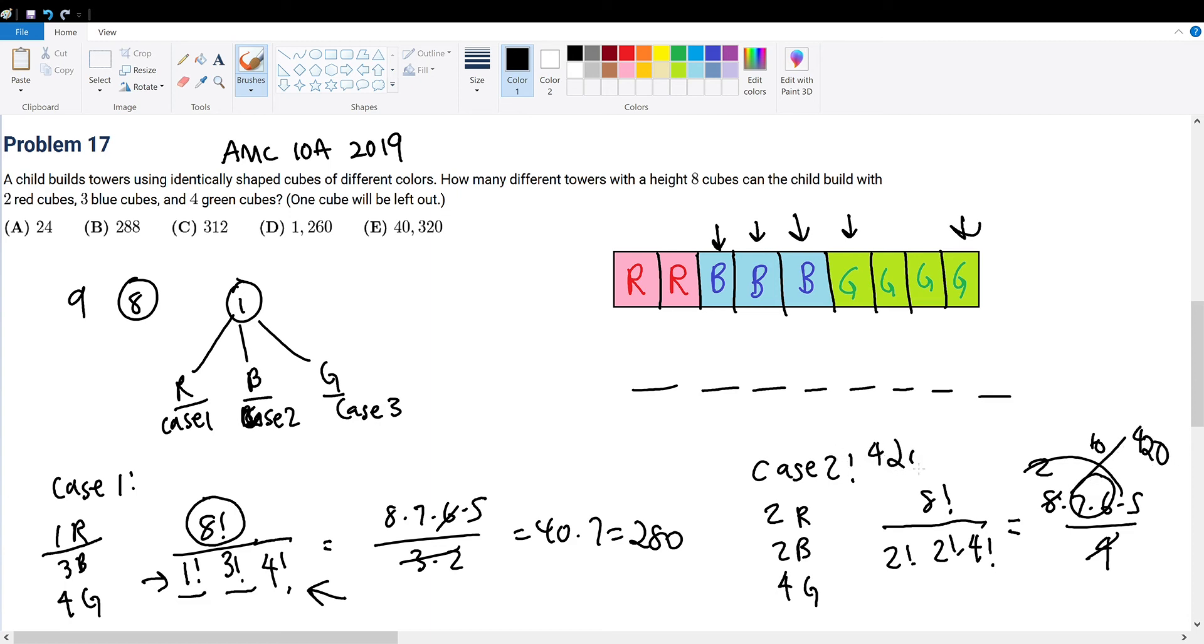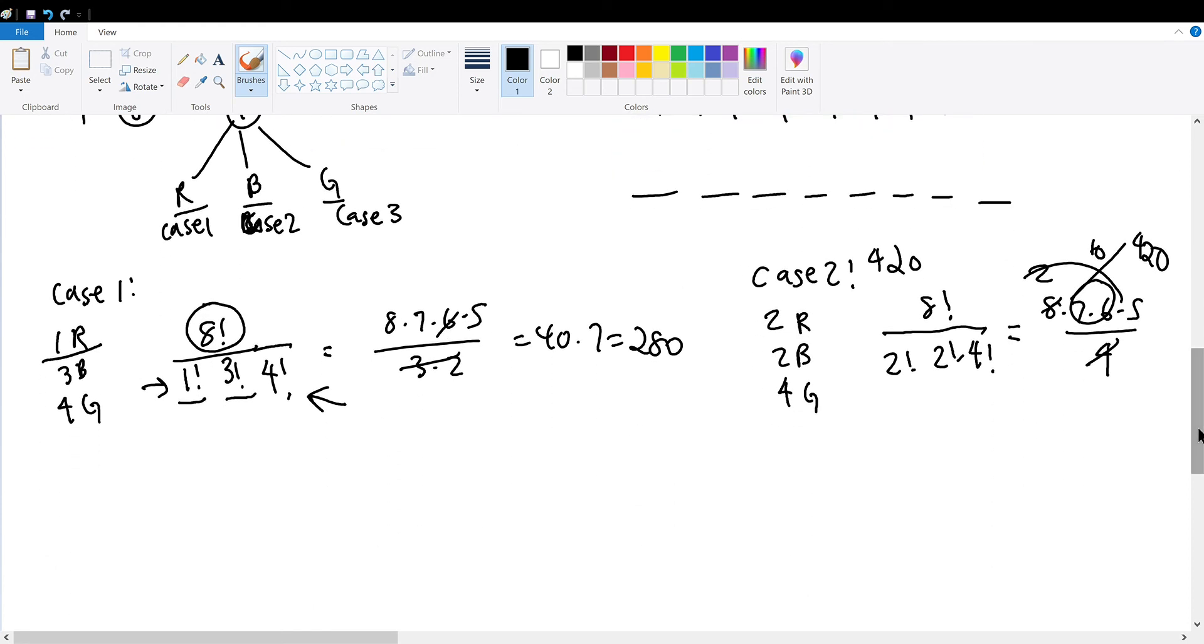But what about case 3? Case 3 is the same process. In case 3, we're excluding 1 green. So we have 2 red, 3 blue, and 3 green. 2 + 3 + 3 sums to 8, so we're still having a tower of height 8.